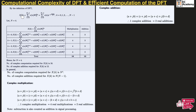Here x of k represents the discrete Fourier transform output for the kth frequency and x of n represents the input sequence. Let us take a simple example where N is equal to 4. Since k ranges from 0 to N minus 1, the value of k will be 0, 1, 2, and 3. The formula becomes x of k equal to summation n equals 0 to 3, x of n times omega of 4 to the power of kn.